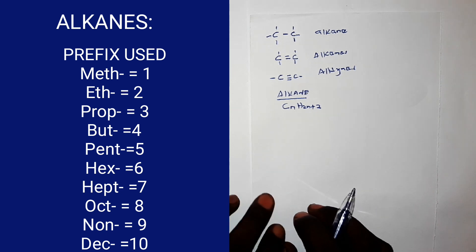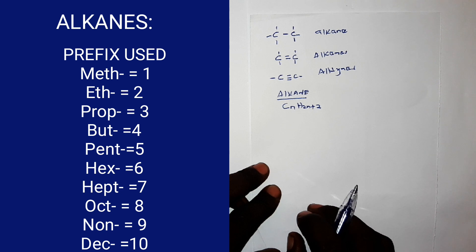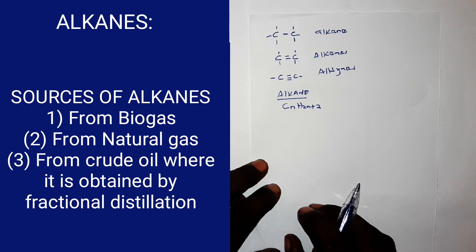Alkanes are said to be saturated hydrocarbons, because they have single covalent bond between at least two adjacent carbon atoms. Alkanes can be biogas, natural gas, or they are obtained from crude oil by fractional distillation.